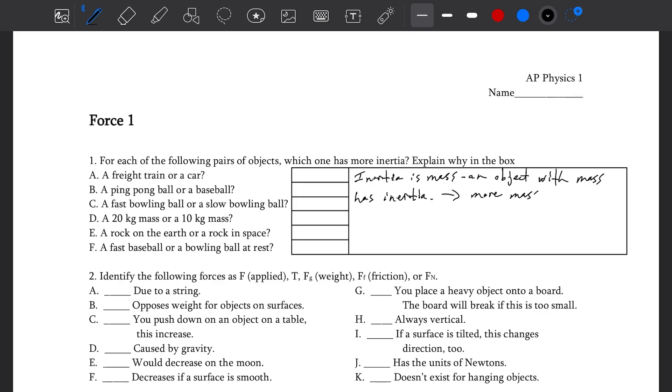When you see this on a test or in a question, mass and inertia are going to be treated as the exact same thing. Which one has more? Freight train or car? Which one's bigger? Freight train. Ping pong ball or baseball? Baseball. Fast moving or slow moving bowling ball? Velocity doesn't matter. They're the same.